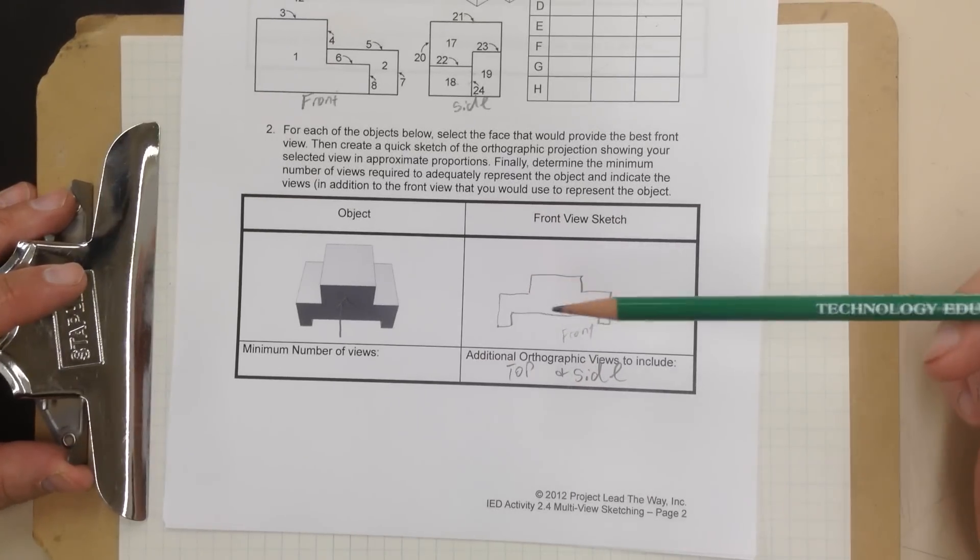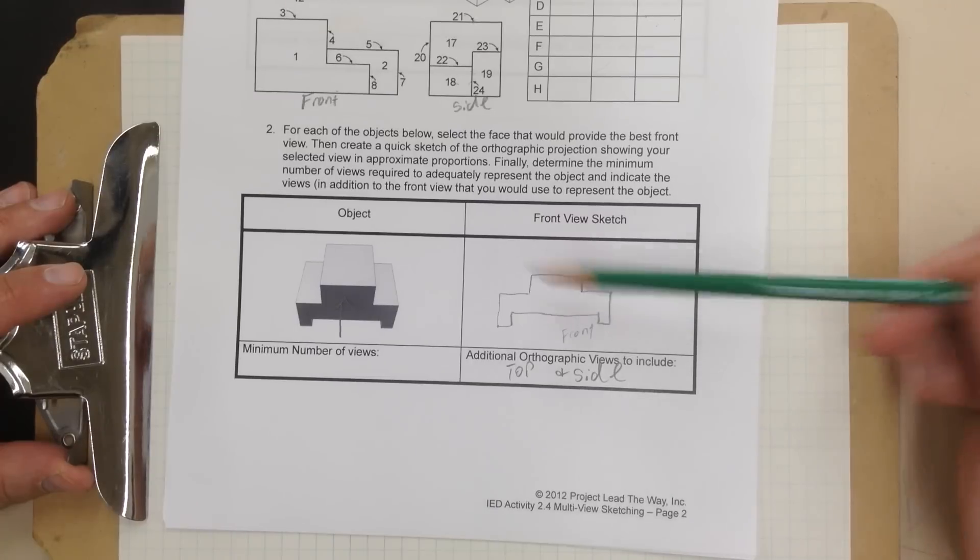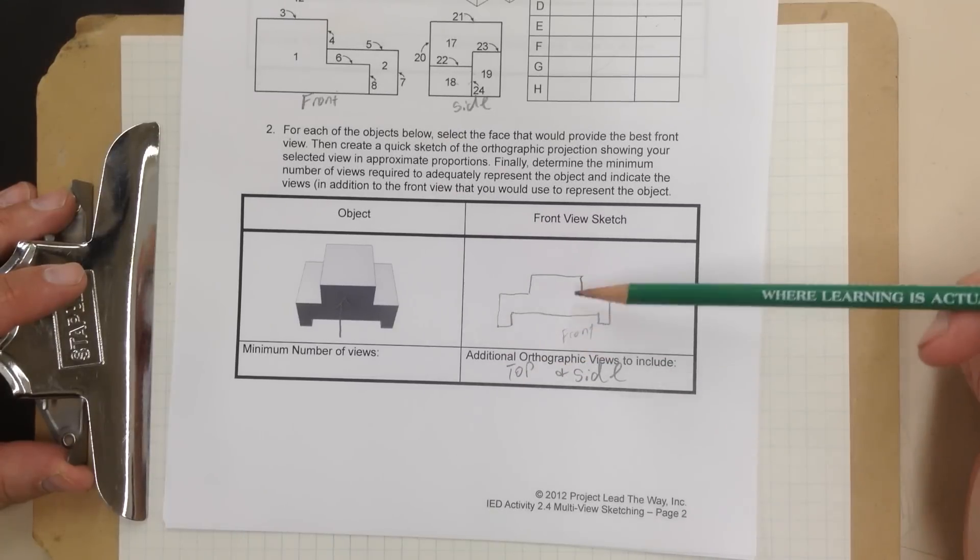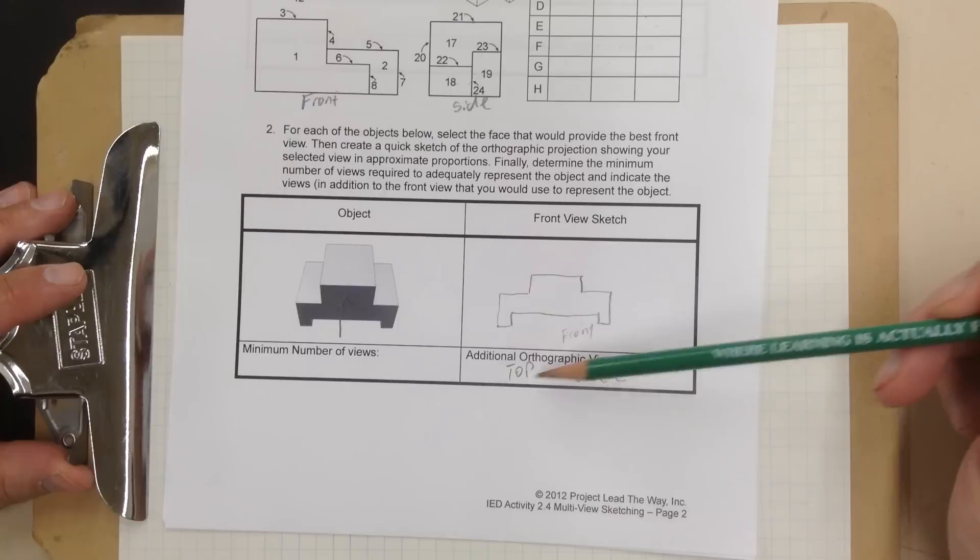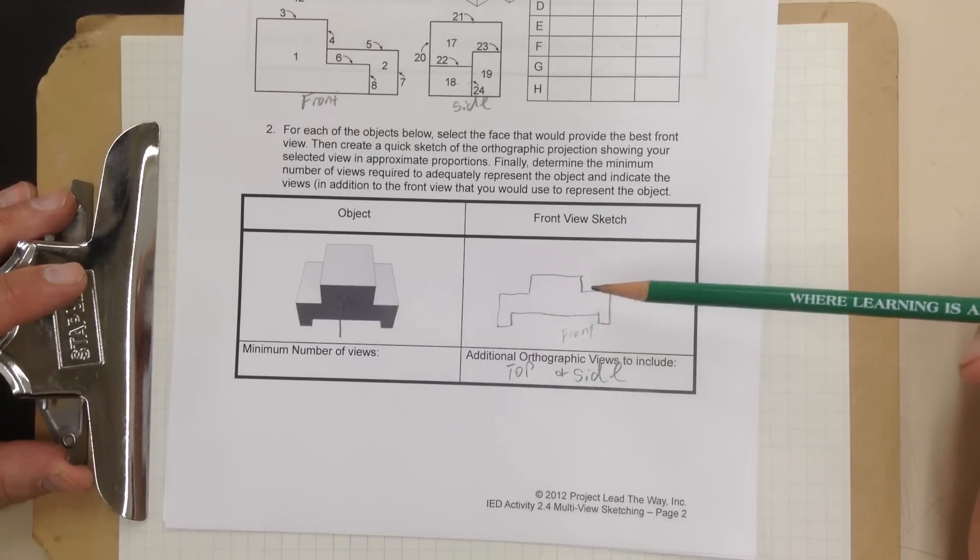So what I want you to do is take this, sketch it in your notebook for number two, and go ahead and label your additional orthographic views to include.